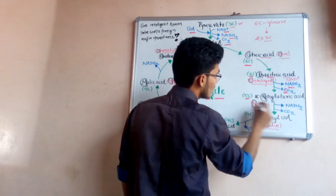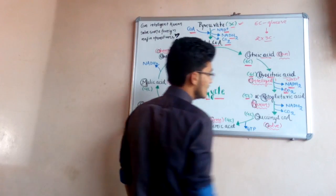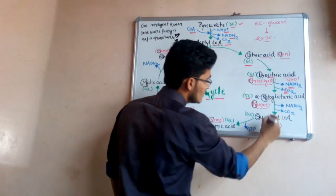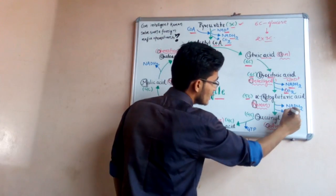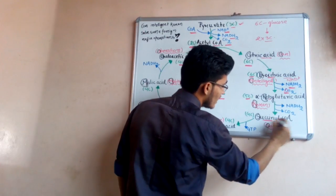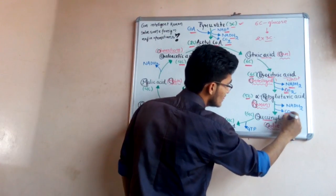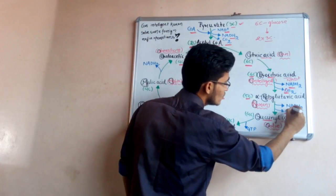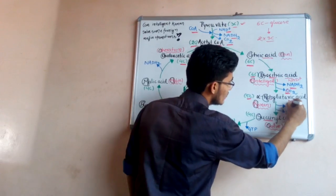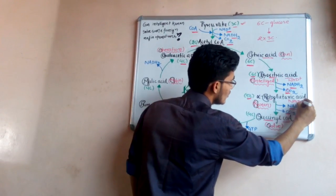After that, ketoglutaric acid is converted into succinyl Coenzyme A by releasing one CO2 and one NADH2 by utilizing NAD positive.